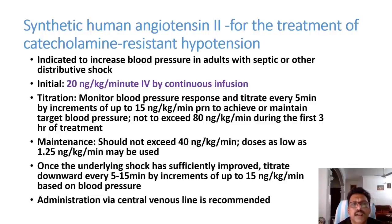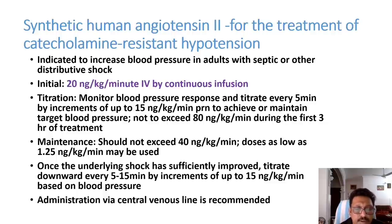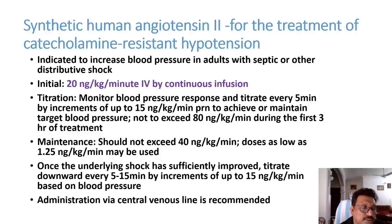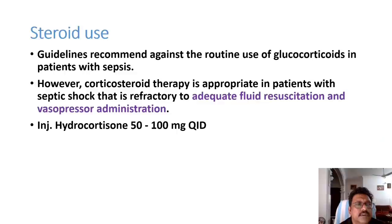A newer option is synthetic human angiotensin II, which can be used for catecholamine-resistant hypotension at a dose of 20 nanograms per kg per minute IV as a continuous infusion. It is not yet widely available in our settings but may be a good choice when patients do not improve after initial lines of treatment.